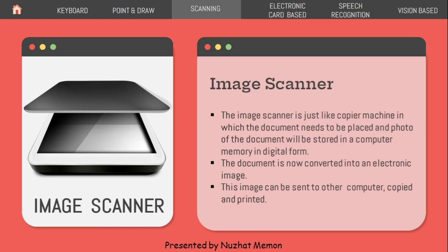Image scanner works just like a copier machine — a document is placed and a photo of it is stored in computer memory in digital form. Unlike a copier machine which gives a hard output, the scanner stores it digitally. The document is converted into an electronic image, or e-image, which can be sent to other computers and further copied or printed wherever needed.